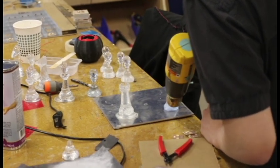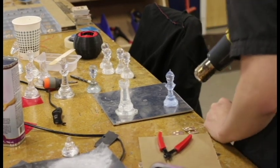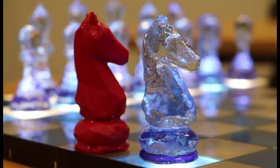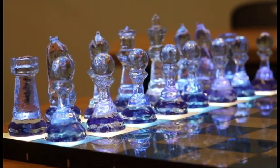The templates were then used to create silicone molds. The final pieces were made by casting clear polyester resin into the molds.